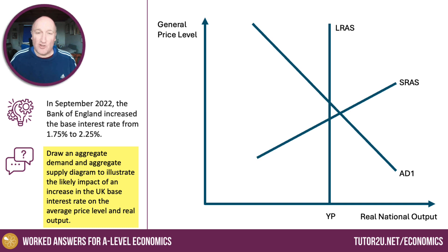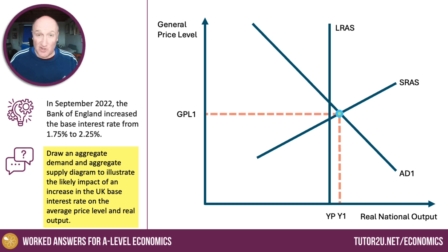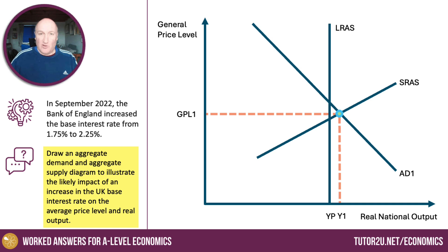I'm going to assume that in the short run, initially, the equilibrium output is at the intersection of short-run aggregate supply and aggregate demand. This gives us a level of output Y1 and price level GPL1. But of course, now we've got a positive output gap — the economy is operating with actual GDP above potential.